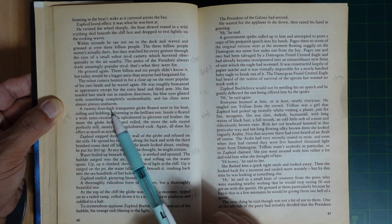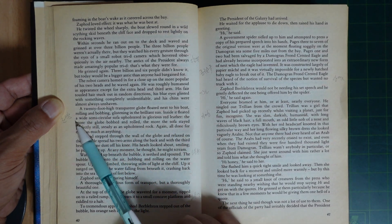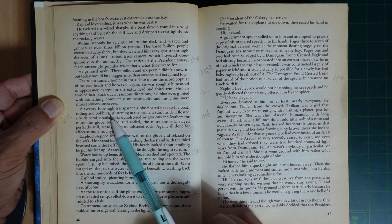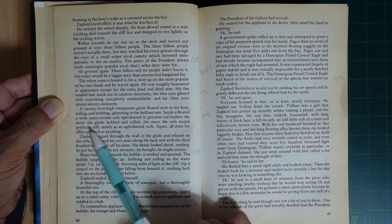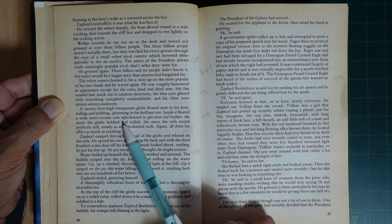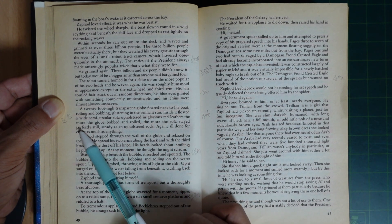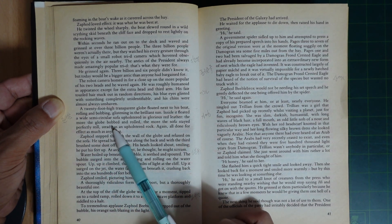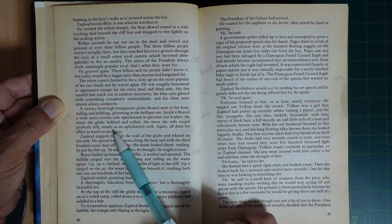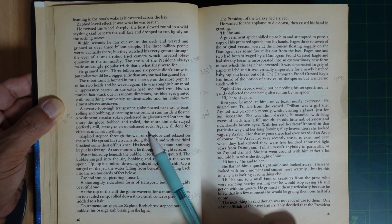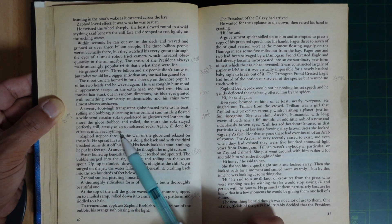A twenty-foot-high transparent globe floated next to his boat, rolling and whirling, glistening in the brilliant sun. Inside it floated a wide semicircular sofa upholstered in glorious red leather. The more the globe bobbled and rolled, the more the sofa stayed perfectly still, steady as on a camshaft. Again, all done for effect as much as anything.